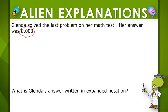We want to write this number in expanded notation. We have 8 in the 1's place, so we would write 8 times 1. Then we have 0's, so we can skip those place values.